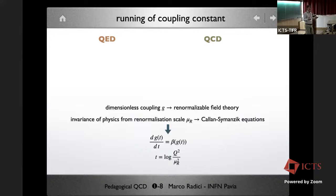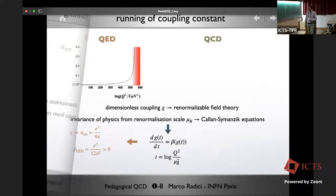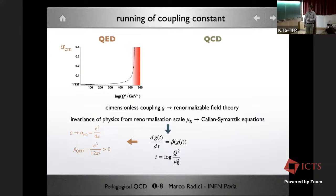Both QED and QCD are renormalizable field theories because their couplings are dimensionless. Renormalizability means divergences appear and are cured by introducing a renormalization scale with counter-terms. Since physics doesn't depend on this scale, requiring observables to be scale-independent produces the Callan-Symanzik equations. One byproduct is the running coupling constant: the coupling g changes with a parameter t related to the log of the scale, and the function driving this change is the beta function.